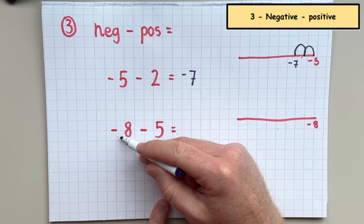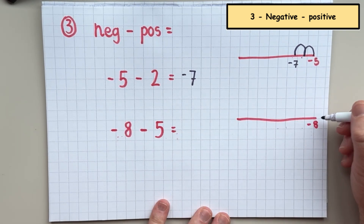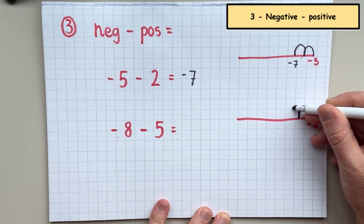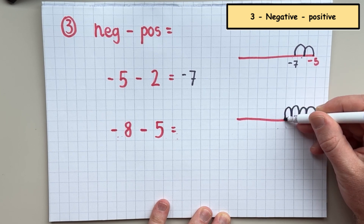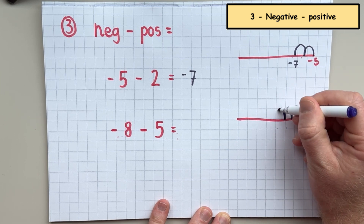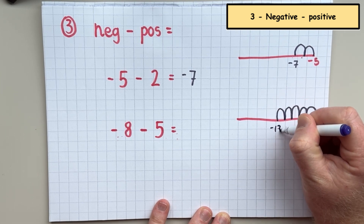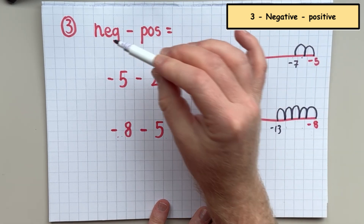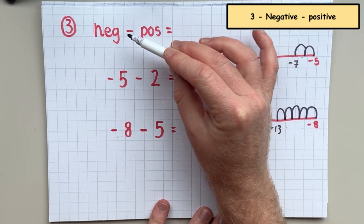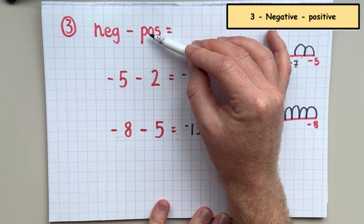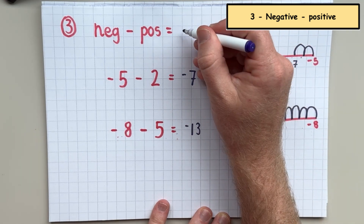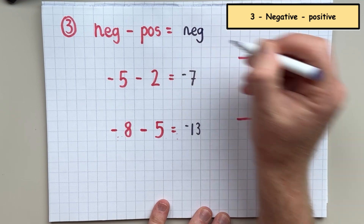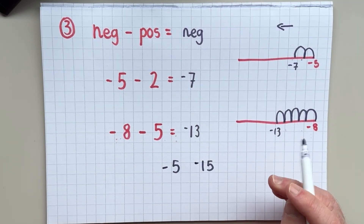In the next example we've got negative eight take away five. So again we go: negative nine, negative ten, negative eleven, negative twelve, negative thirteen. The answer is negative thirteen. So if you have a negative number and you are taking away a positive number, you will always get a negative answer.